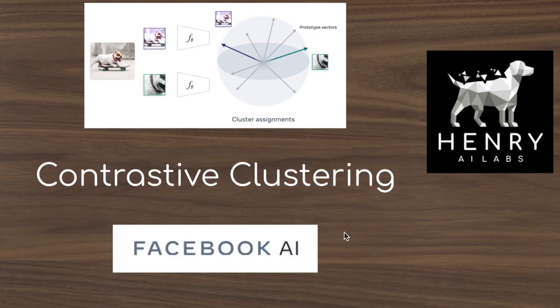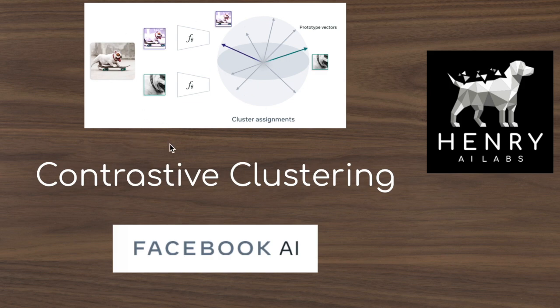Thanks for watching this overview of the contrastive clustering algorithm from researchers at Facebook AI. Hopefully this video gave a decent sense of the related contrastive learning algorithms — SimCLR, MoCo, BYOL — and how they relate to each other, as well as an introduction to adding clusters to contrastive self-supervised learning. The high-level idea of predicting features from codes using local and global views of the same image should be clear, though the math behind optimal transport and the Sinkhorn-Knopp algorithm for balancing the codebook is admittedly tricky. Please subscribe to Henry AI Labs for more deep learning and AI videos.